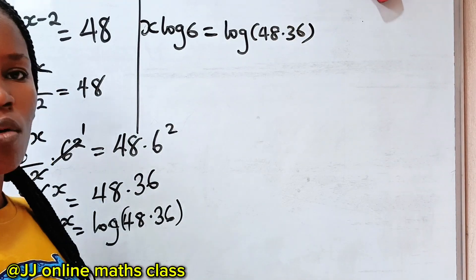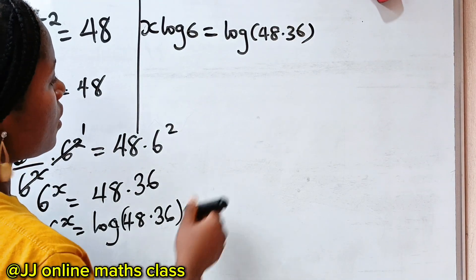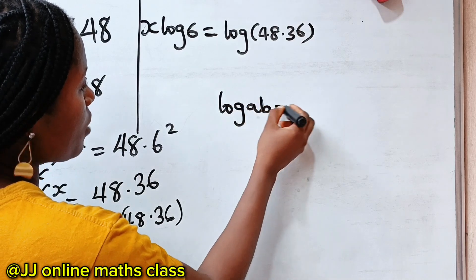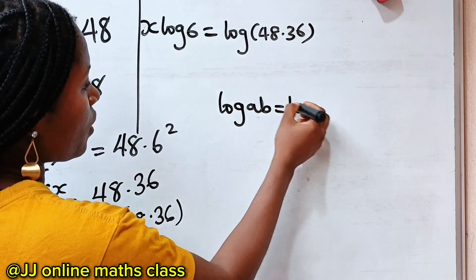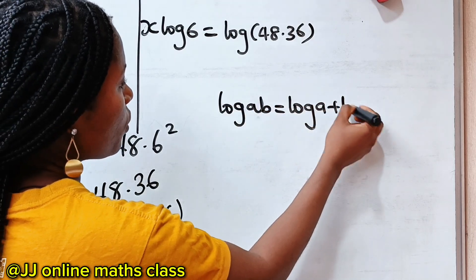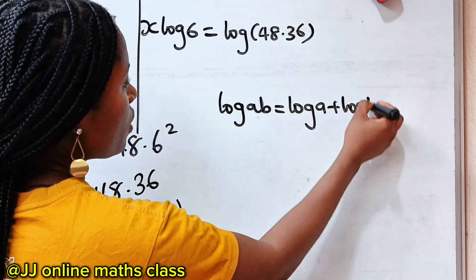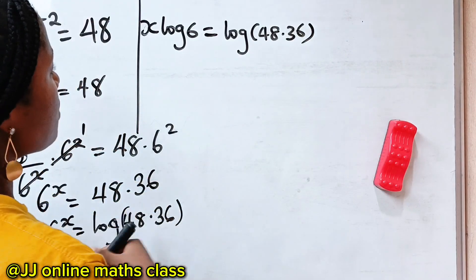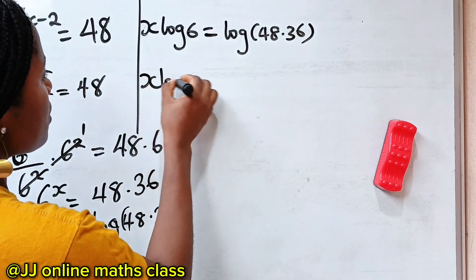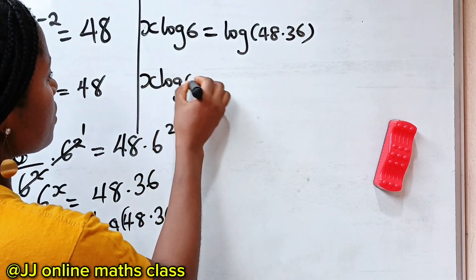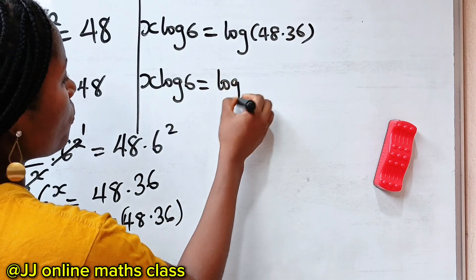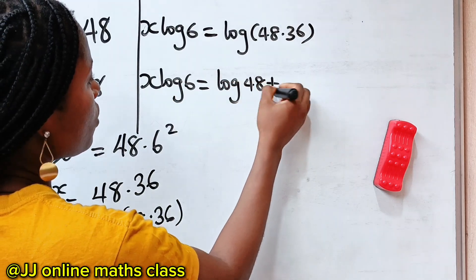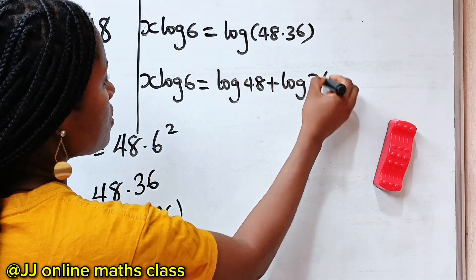Also recall another law of logarithms that states that log of a multiplied by b is equal to log a plus log b. So we can write this as x·log 6 is equal to log 48 plus log 36.